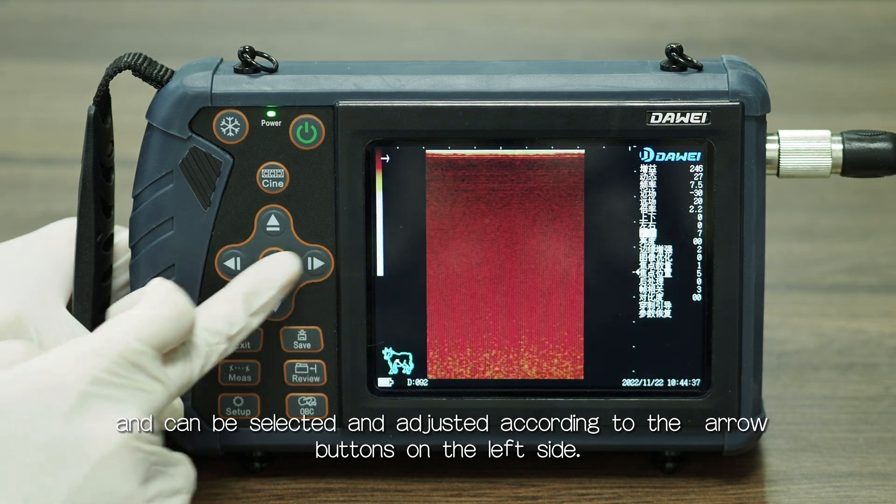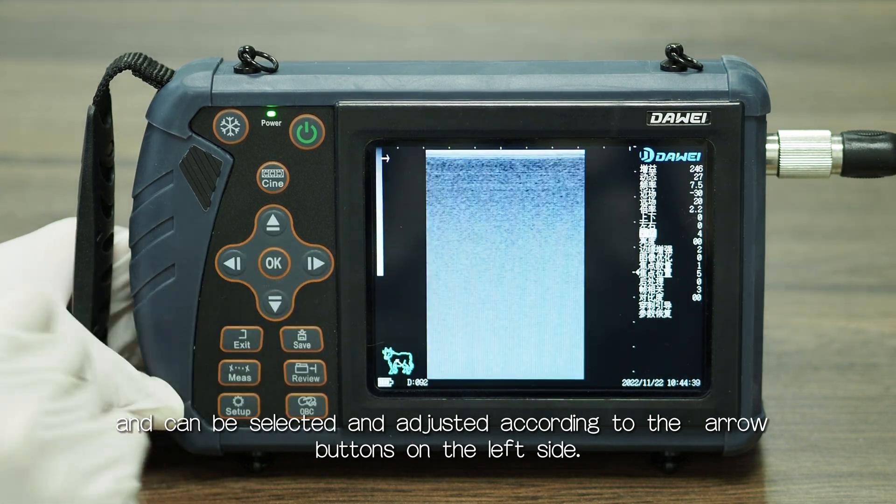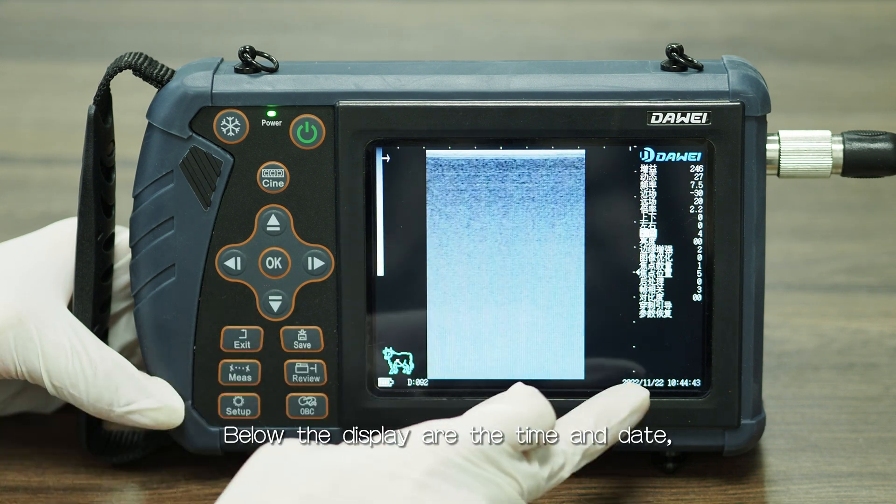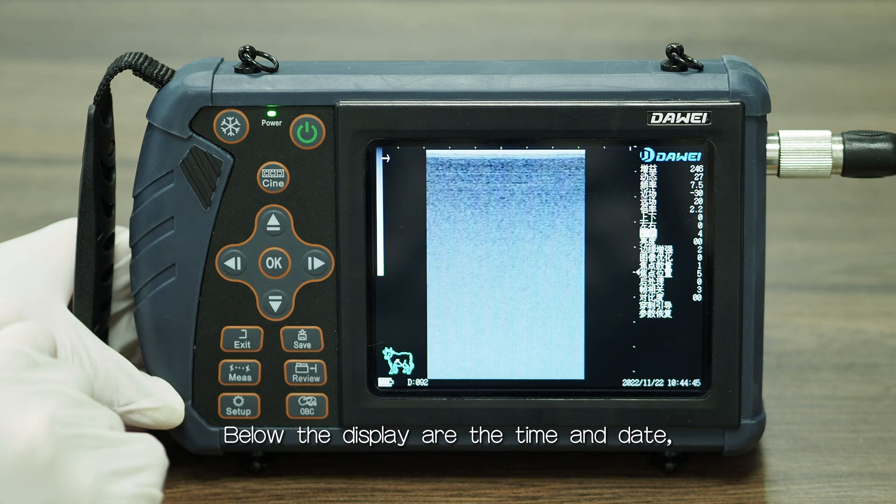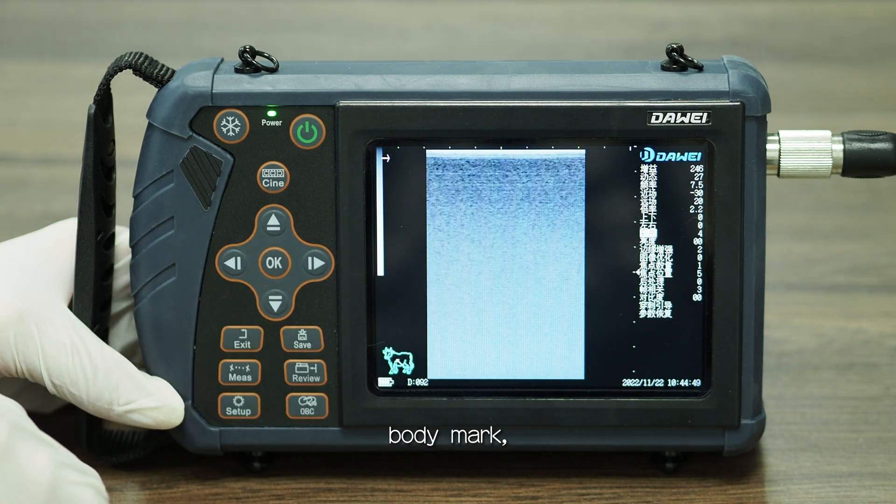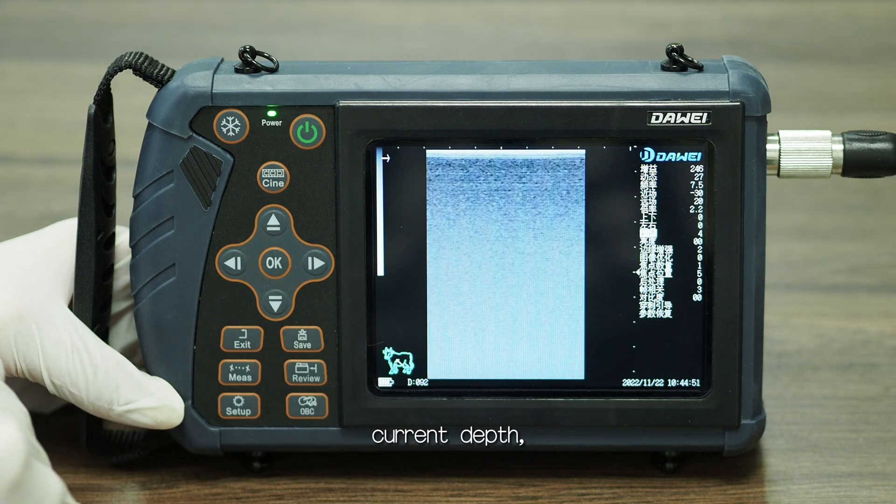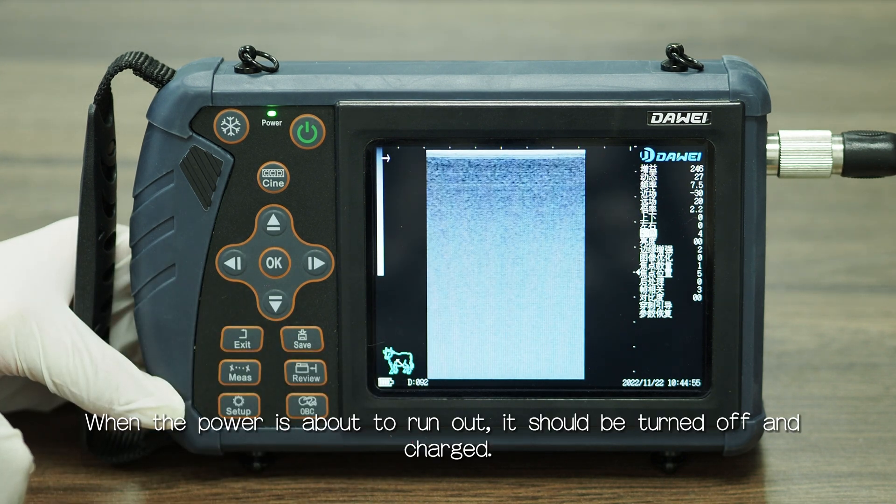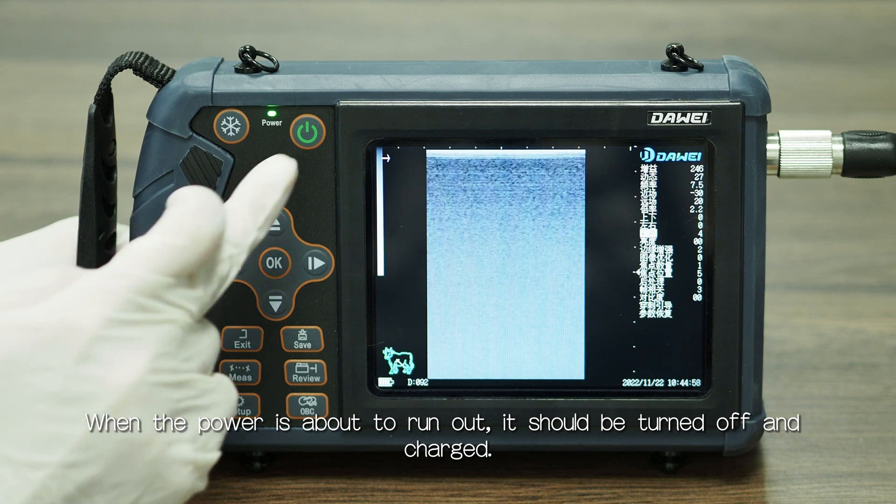Below the display are the time and date, body mark, current depth, and current battery level. When the power is about to run out, it should be turned off and charged.